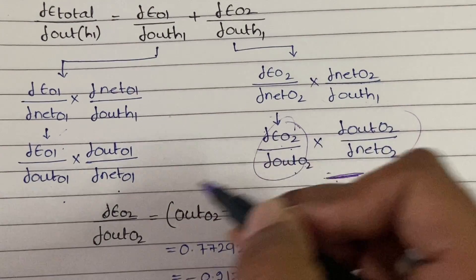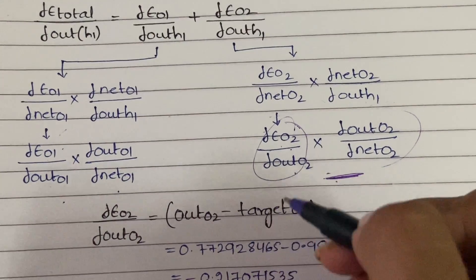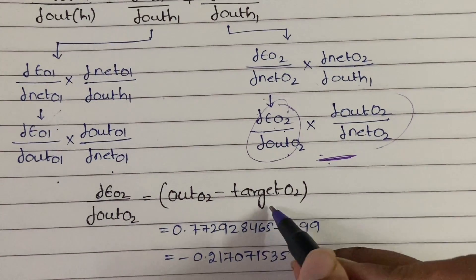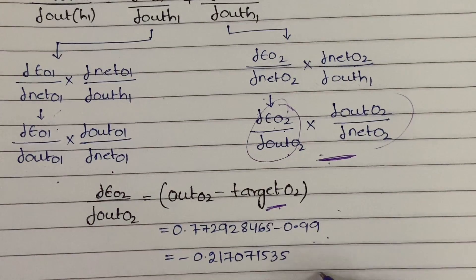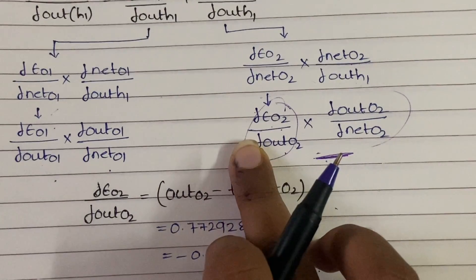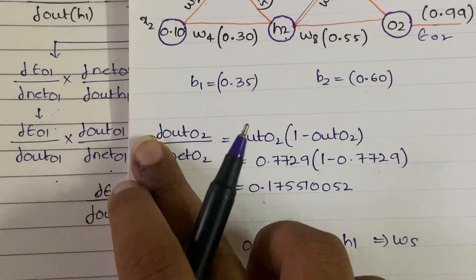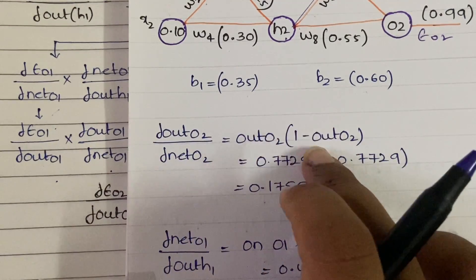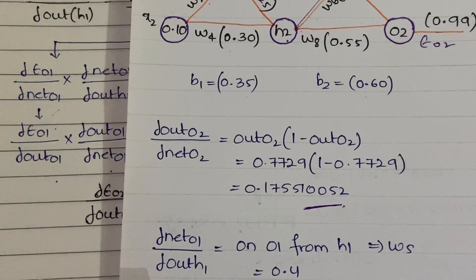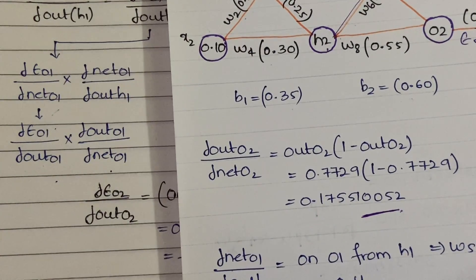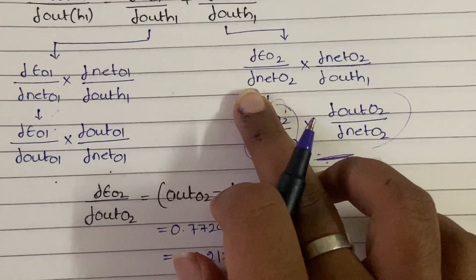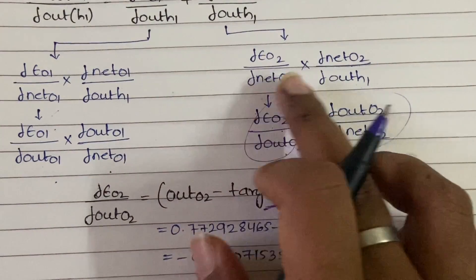Let's calculate for the E_o2 branch first. dE_o2/d(out_o2) = out_o2 − target_o2. The value of out_o2 from the first video is 0.7729, and the target is 0.99, so after subtraction you get −0.21707. Then d(out_o2)/d(net_o2) = out_o2 × (1 − out_o2), which gives 0.17551. Multiplying these two terms gives the value of dE_o2/d(net_o2).